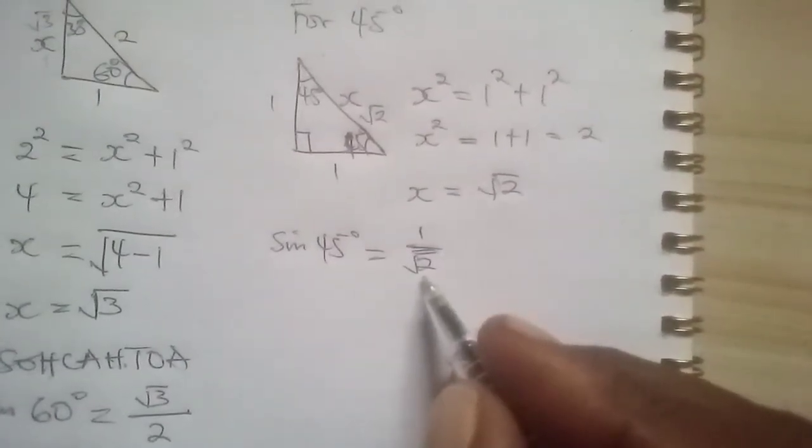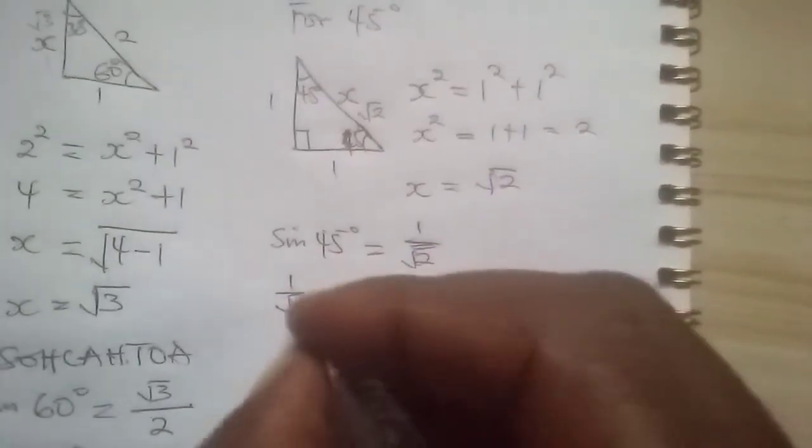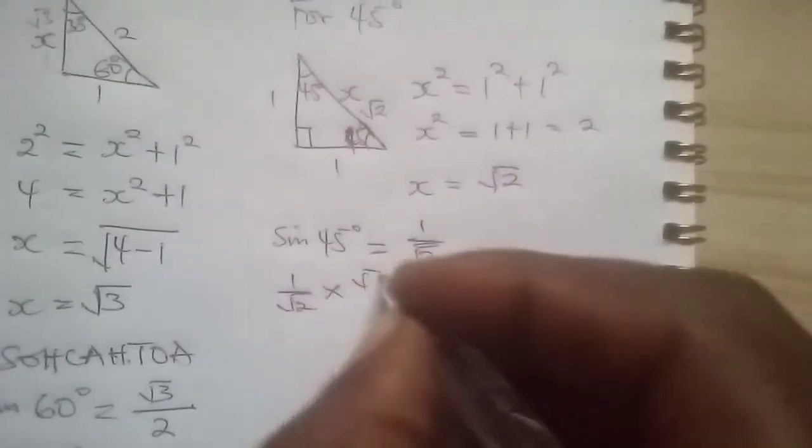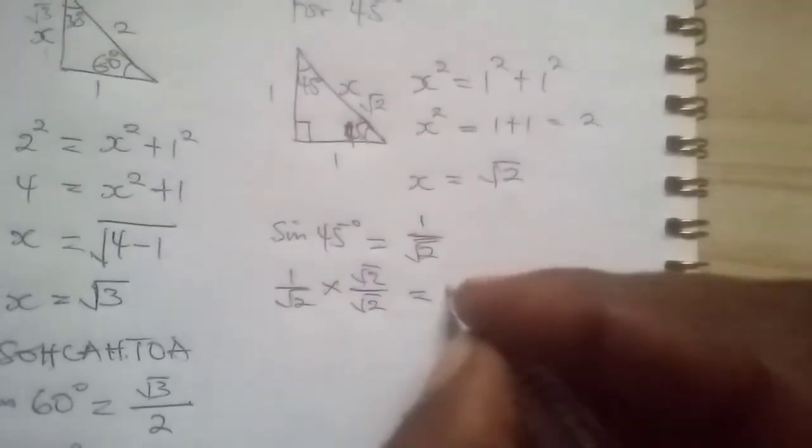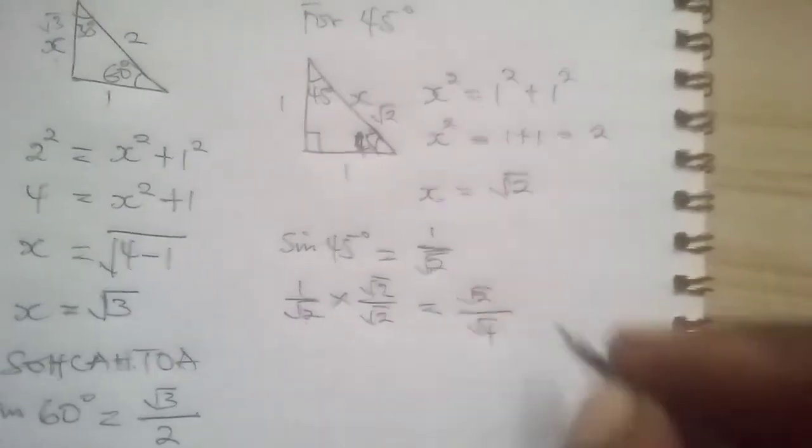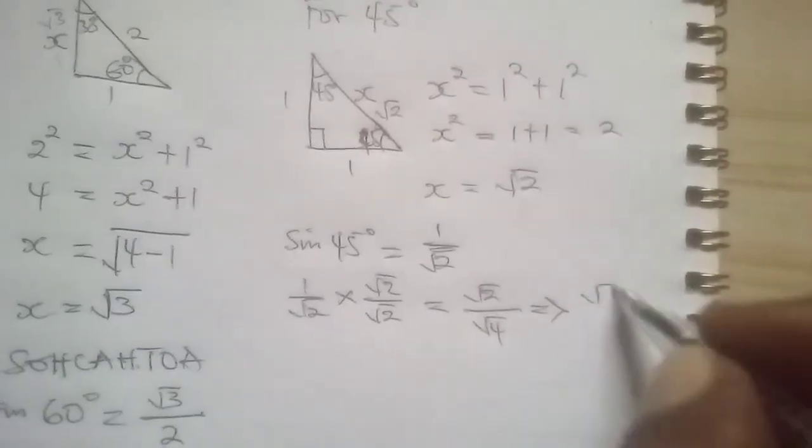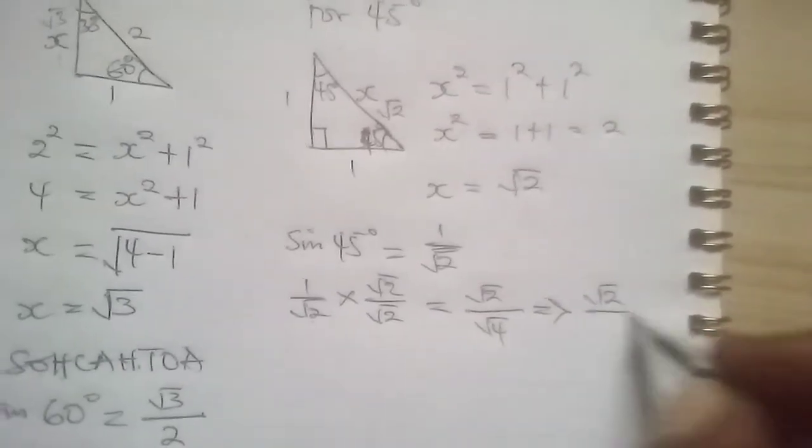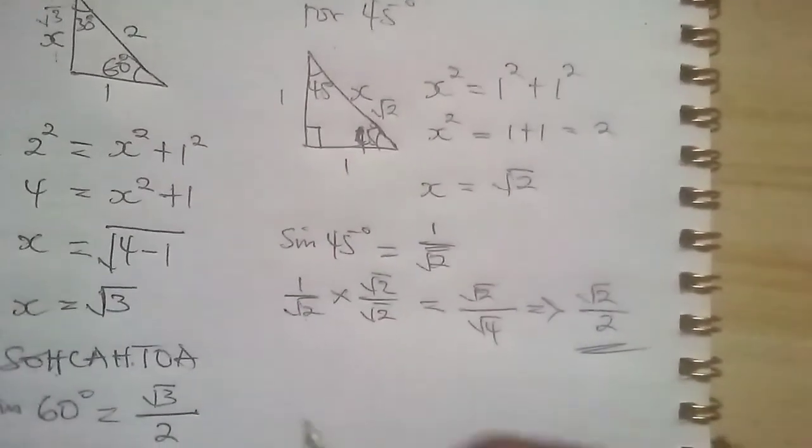But remember, you have to rationalize. So if you rationalize, you're going to have 1 over root 2 times root 2 over root 2. So what that will give you, this times this will give you root 2 over, this times this will give you root 4. And if you stretch that forward, this is root 2, root 4 is 2. So this is sine 45. You can confirm that with your calculator.